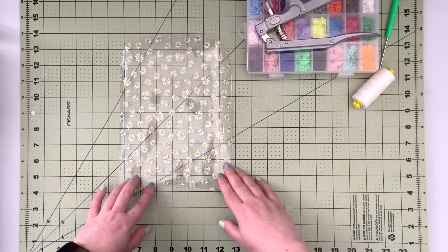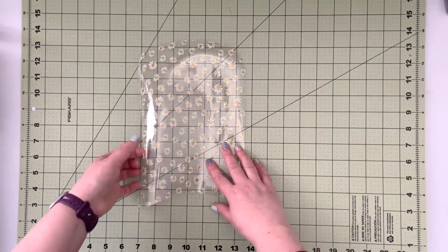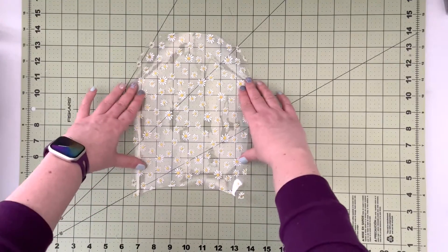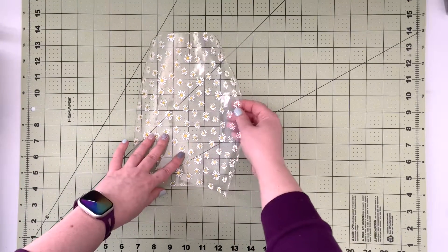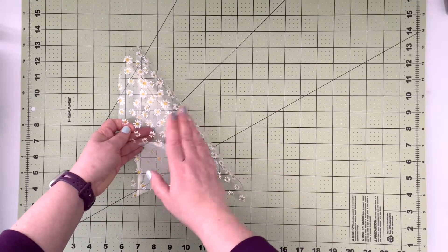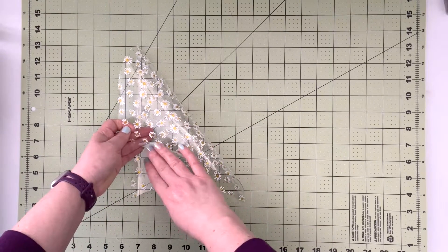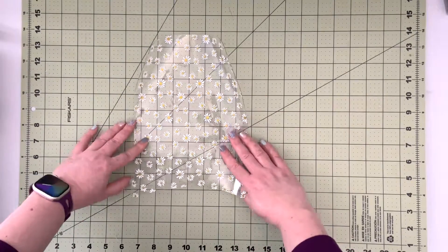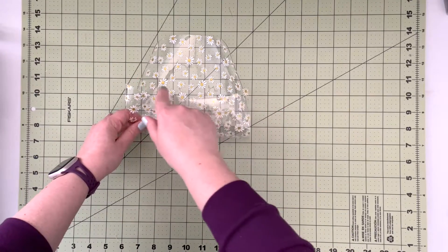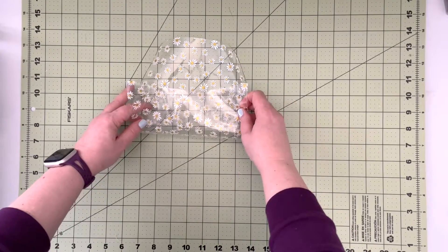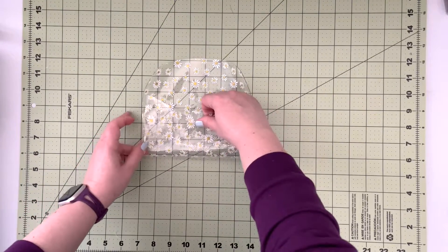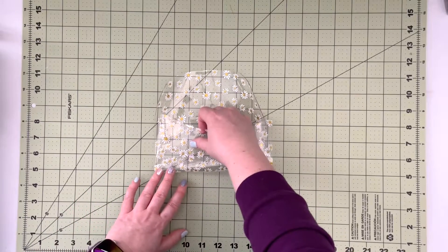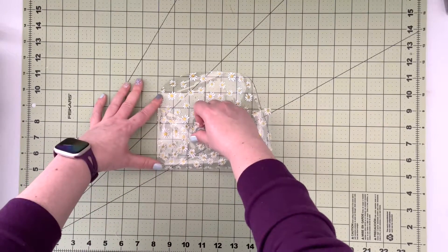To start the project we're gonna take our clear vinyl panel and we're gonna place it wrong side up on the table. So you want to make sure if you have a print that has a right or wrong side that the right side is facing your table. And you're gonna fold the end with the inside curve on the end and you're gonna bring it up by four inches.